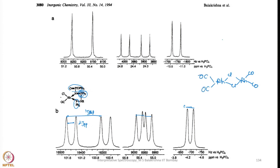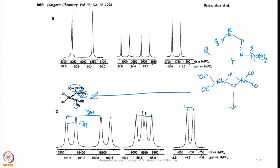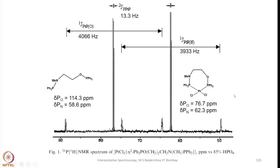The ligand is taken and reacted with half an equivalent of rhodium chlorocarbonyl dimer — two equivalents of ligand — and it gives the compound shown here. We can conclude that the bond is broken and a mono-rhodium compound is formed in this case.